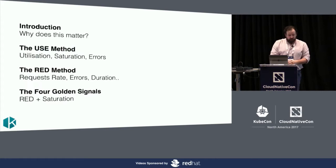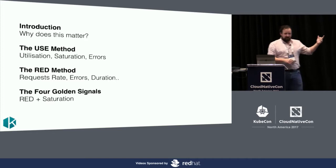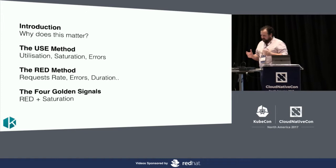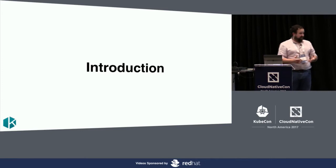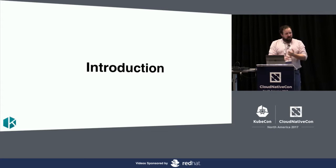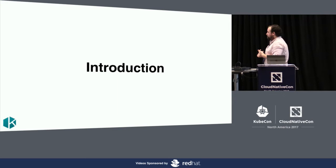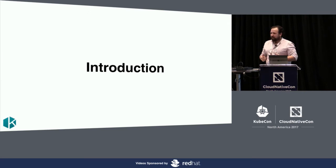We're going to cover four things today. We've kind of done the first already. The USE method — I know the talk was pitched as the RED method, but we're actually going to talk about the USE method first because that was my inspiration, at least for the naming scheme. Then the RED method, which is what we're mainly here to talk about, and then Google's four golden signals. So first, why does this matter? Why do we even need patterns, and why should we care about instrumenting our applications? There was a recent Prometheus conference in Munich, and the RED method was alluded to in multiple different talks, and no one actually explained what it was.